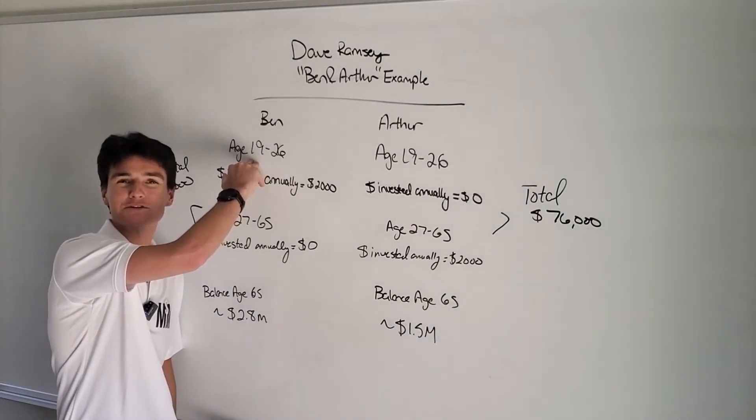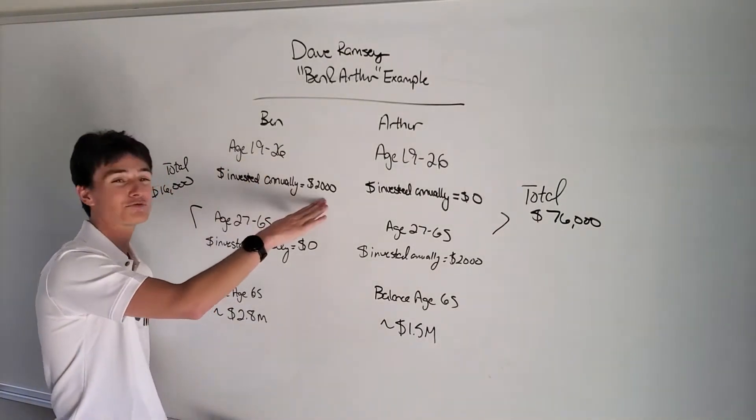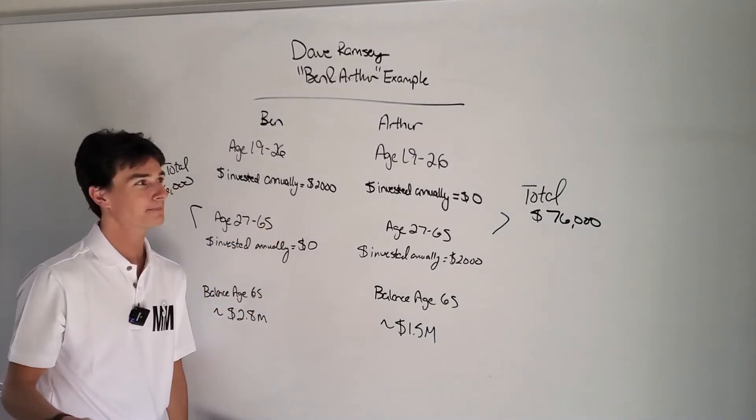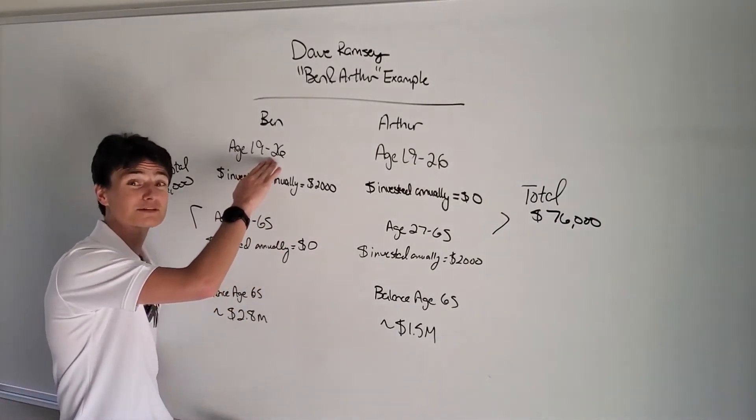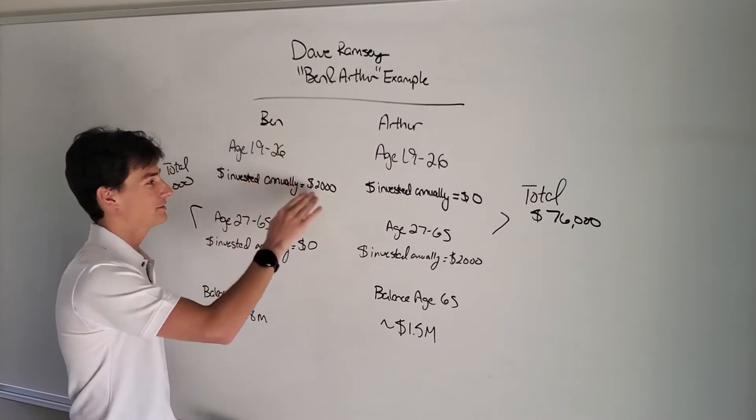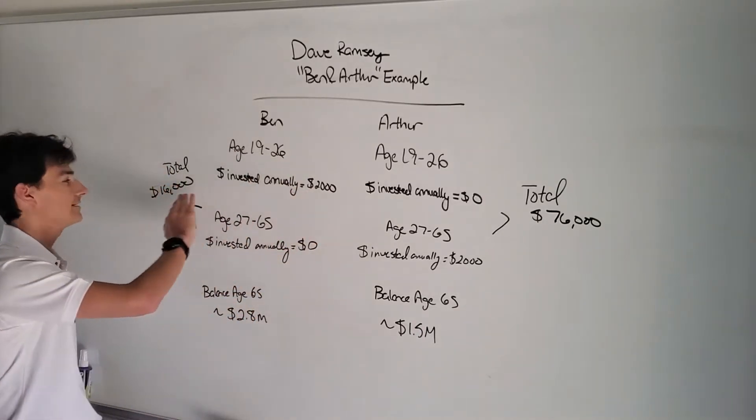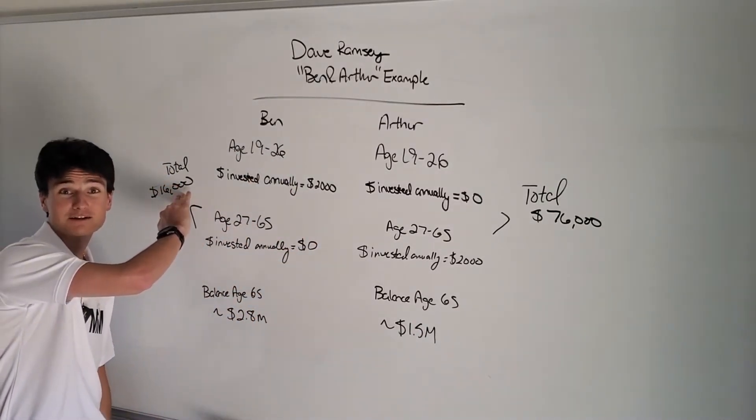So Ben at 19 years old says, hey, you know what? I'm going to start investing. So he starts investing $2,000 a year. He stops investing at age 26. So during that time, he put in $16,000.